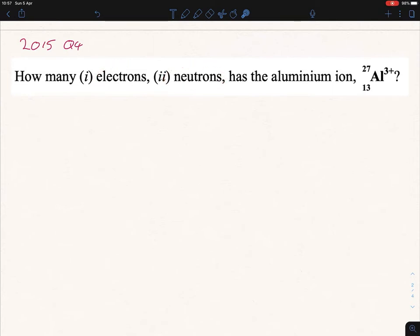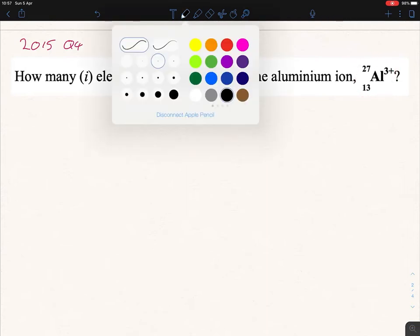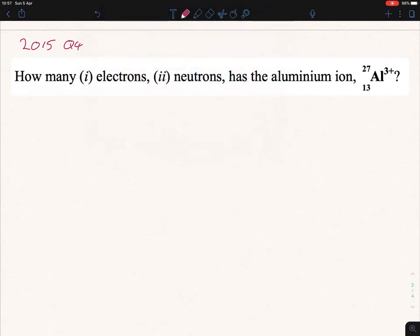So look, if you're a higher level student, you're going to be asked to find out the number of electrons, neutrons, and protons of an ion, so just be careful there. So we'll start with part i, we're asked for the number of electrons.